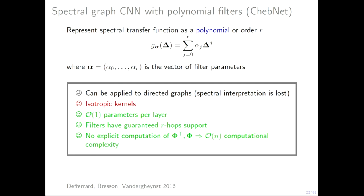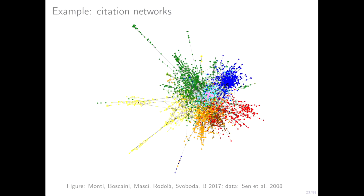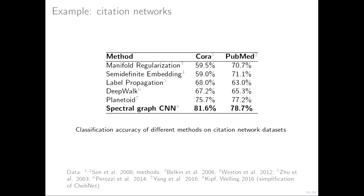This was a nice work by Defferrard and co-authors. They applied it to a citation network where each vertex is a paper and edges represent citations. Each vertex is described by word frequencies from the paper's abstract, and the goal is to classify papers according to venue — whether it's a physics or computer vision paper. This is a semi-supervised setting where we know labels for some vertices and want to predict the rest. They showed quite significant improvement over previous approaches. Cora is like the MNIST of graph or network science — a tiny citation network with about 5,000 vertices.